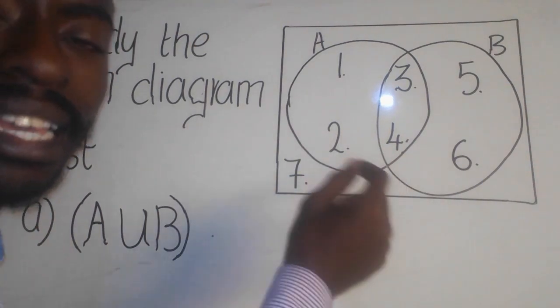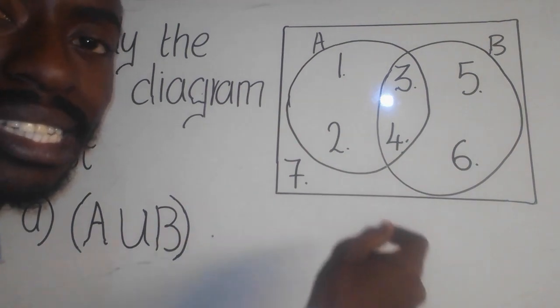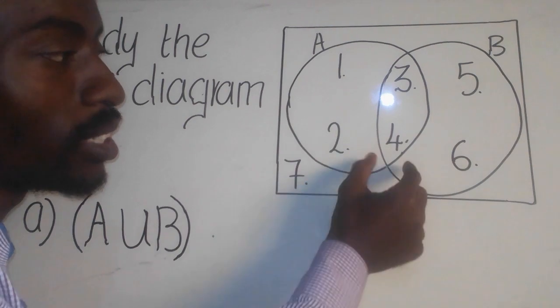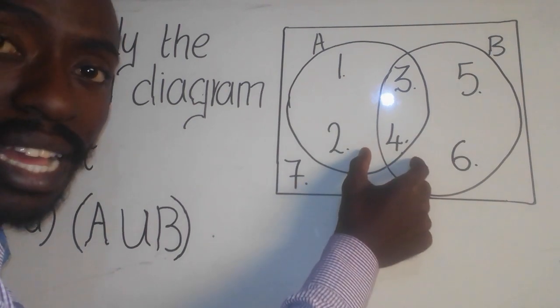This type of a set here, it is known as a joint set because it is made up of two sets here which have joined together. You have seen that? Yes.